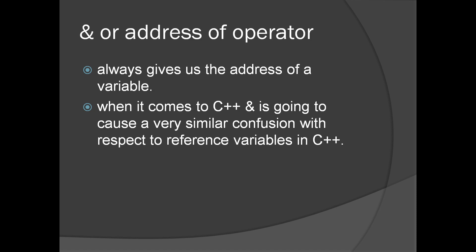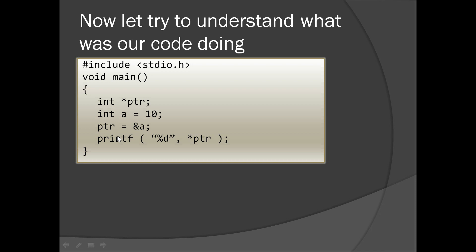Now let's discuss the ampersand operator, also called the address-of operator. This operator always gives the address of a variable. The ampersand operator also has a similarly confusing usage in C++, where it is used to declare reference variables — but we are not discussing that here. We are left with a couple of exercises which we are going to do in Visual Studio and look at the disassembly.